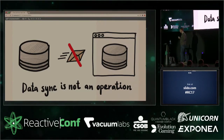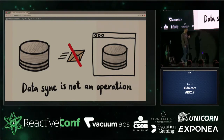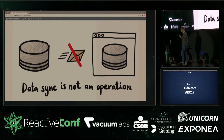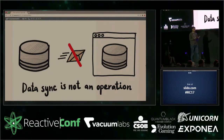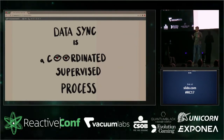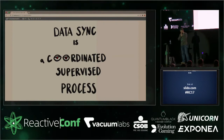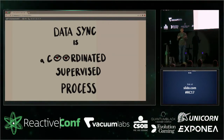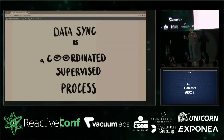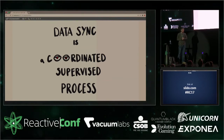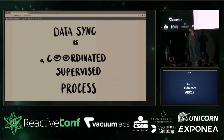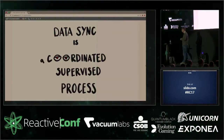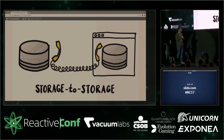My answer is that you should stop thinking in terms of operations. 'Data fetching' is a bad way to think about data synchronization — you should think about it as data synchronization. It's a process that spans over time. You get updates continuously, you have retries, and it just goes on and on. You need to start thinking about this as a process rather than a single operation, and everything becomes much easier.